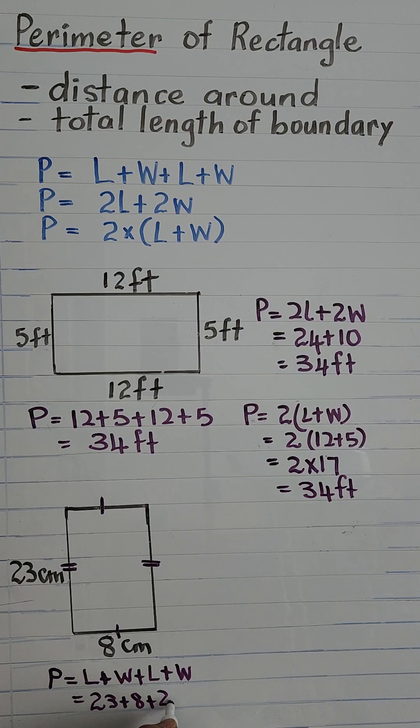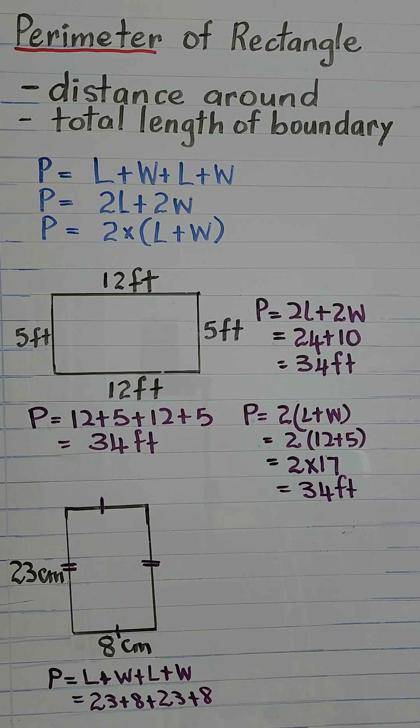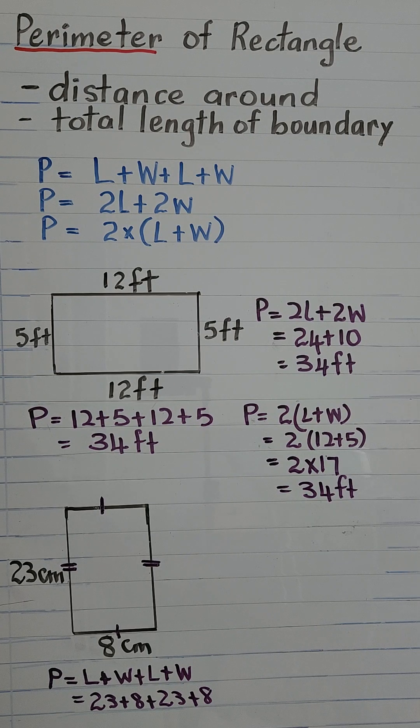And 23 plus 8 plus 23 plus 8, that is equal to 23 plus 23, 46, and 8 plus 8, 16. 46 plus 16, that is 62. So this is equal to 62 centimeters.